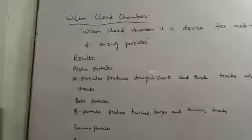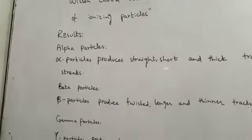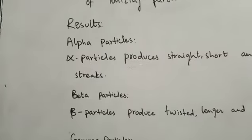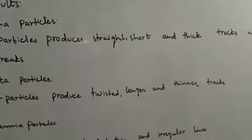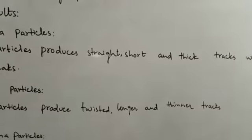What is important after the Wilson cloud chamber? Now, how is MCQs? MCQs come to the point that the rays of alpha are straight, short and thick.